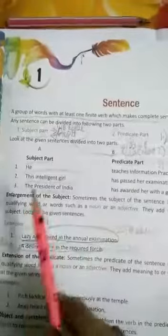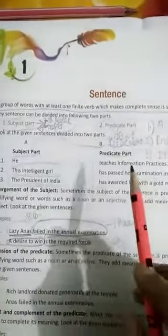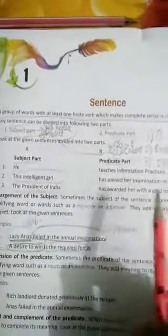That a sentence will be a group of words that will start with a capital letter, end will be a full stop, question mark or exclamation mark, and it will have a complete sense. Do you understand?